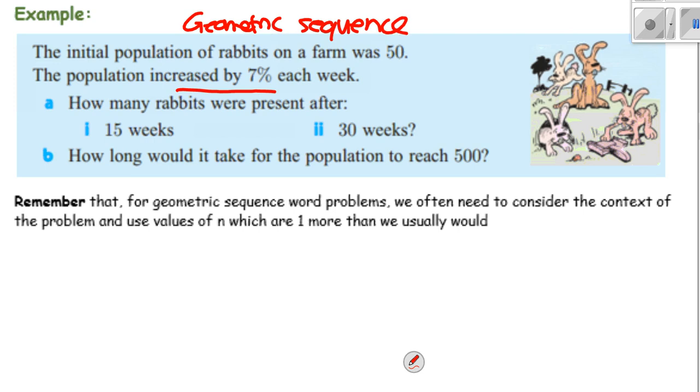What would be u₁? 50, yeah, exactly. It's the initial population, u₁ is 50. And what's our common ratio? Close, did you say 0.07? Really close. Because remember, it's all relative to 100%. So what's 100 plus that if it's increased by 7%? Yeah, exactly, 1.07.